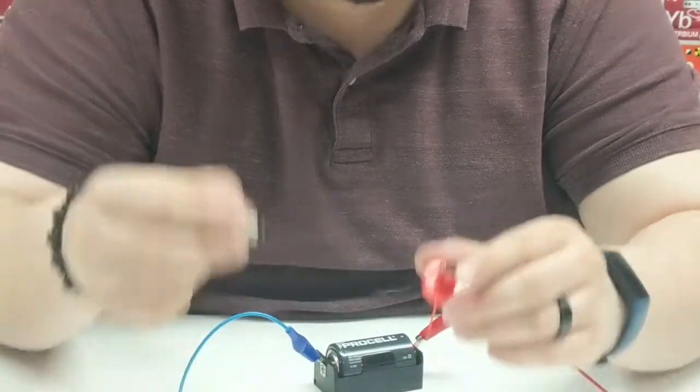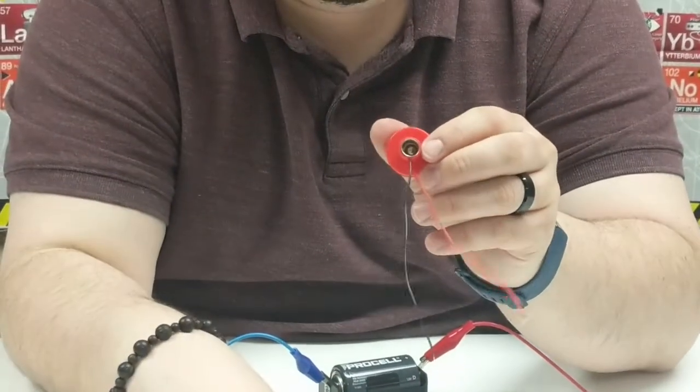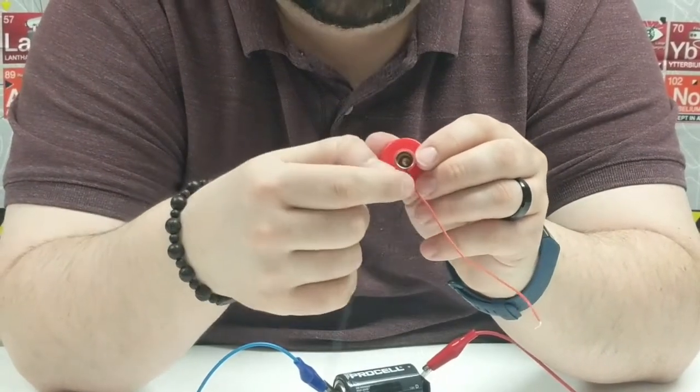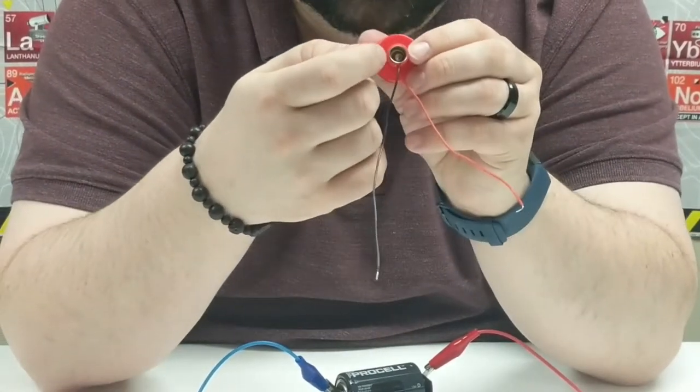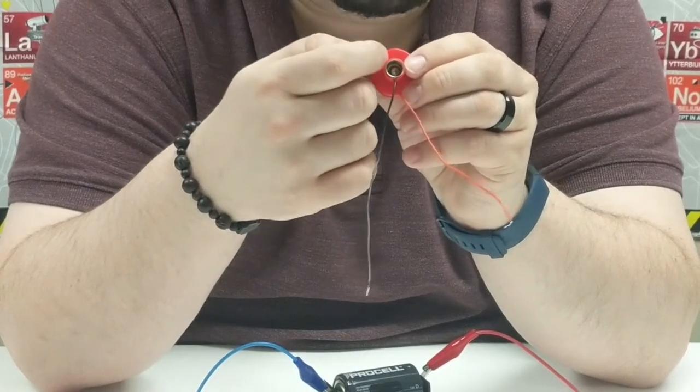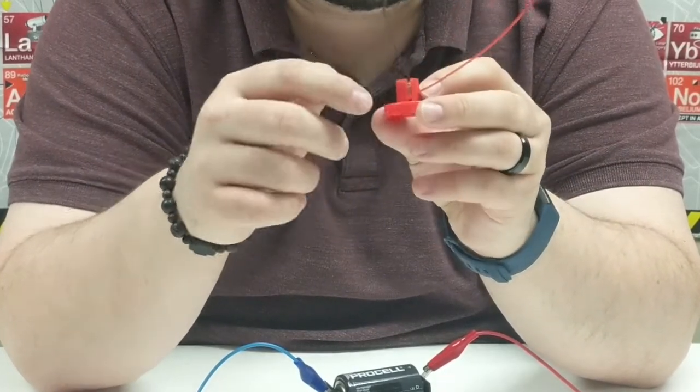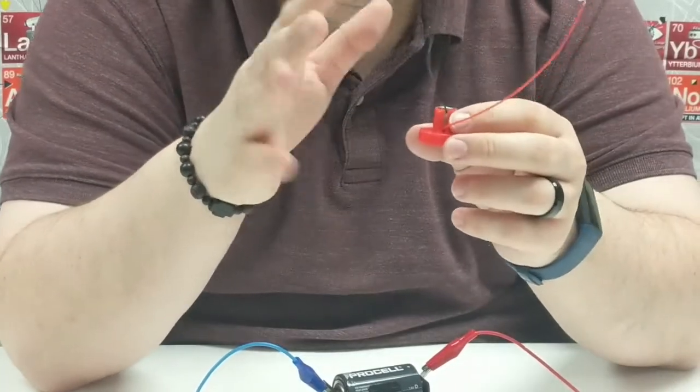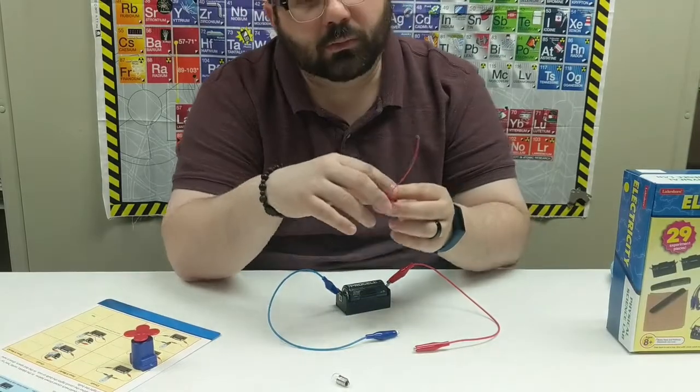So when I screw it in here, you can see that along the sides of the wall there's metal going there, and at the very bottom there's another chunk of metal. And those are connected to the black and red wire. So it's just a different shape of a circuit, but it's really cool.